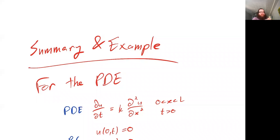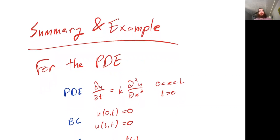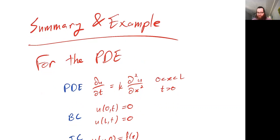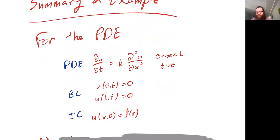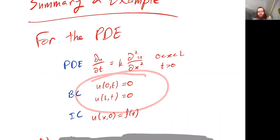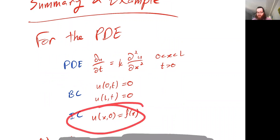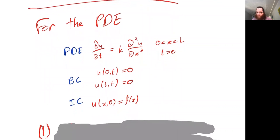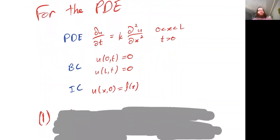In the last part of this series of videos, we're going to summarize the procedure for solving the heat equation with homogeneous boundary conditions and a given initial condition. We'll summarize the procedure we talked through and then give an explicit example. So for the PDE — the heat equation with boundary conditions and initial condition — how do we construct a solution U?